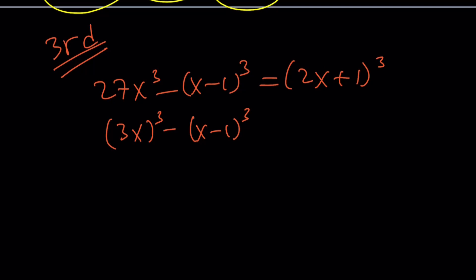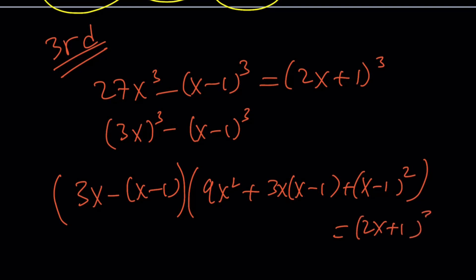When you factor a cubed minus b cubed, you're going to get (a minus b), one of the factors. And the other factor is going to be a squared, which is 9x squared, plus ab, which is this, plus b squared, which is (x minus 1) squared. Awesome. And this is supposed to equal what? (2x plus 1) cubed. And then, from here, what do we get? 2x plus 1. That's awesome.